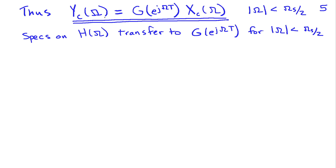Under the conditions that the sampling theorem is satisfied and we have ideal reconstruction, the output spectrum Yc(Ω) equals G(e^j(ΩT)) times Xc(Ω), valid for frequencies less than half the sampling frequency. This means that the specifications on the continuous-time filter transfer directly to the discrete-time filter, provided we stay within that bandwidth.